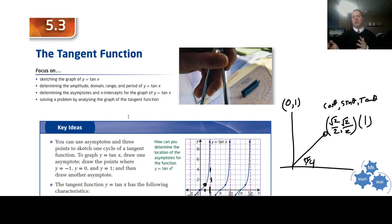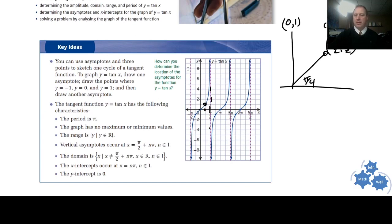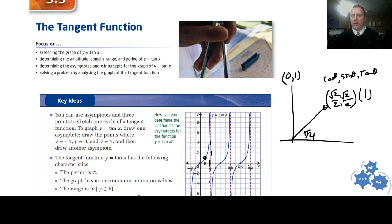All right, the tangent function. The reason why the tangent function comes a little bit later in this chapter is because it's very different than the sine and cosine. Sine and cosine are very much the same, a lot of similar characteristics. The tangent graph is funny. First of all, the big thing is it's got these asymptotes. It's got asymptotes. And where do the asymptotes come from? Why is tan so strange?